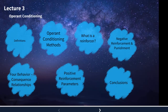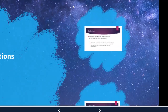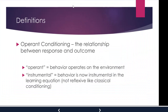This lecture is about operant conditioning, and we're going to start with some definitions. With classical conditioning, we learned that an animal or person can learn an association between two stimuli — the CS and the UCS. With operant conditioning, we're learning an association between a response and an outcome.